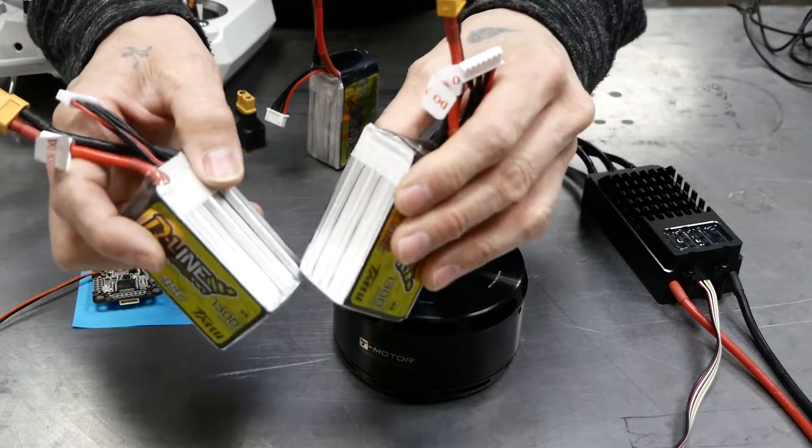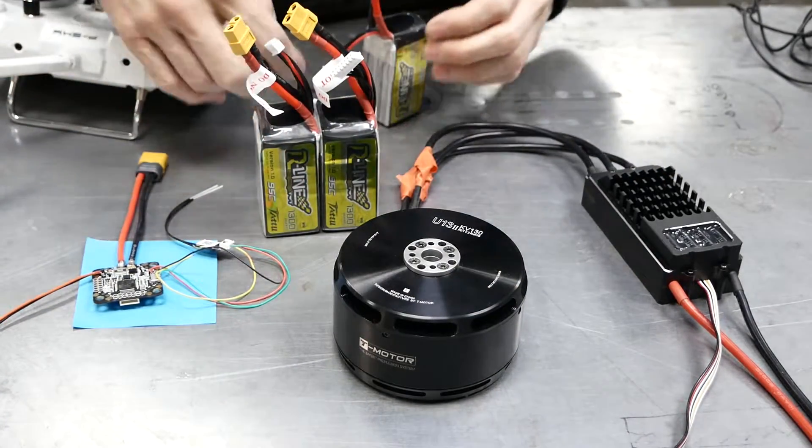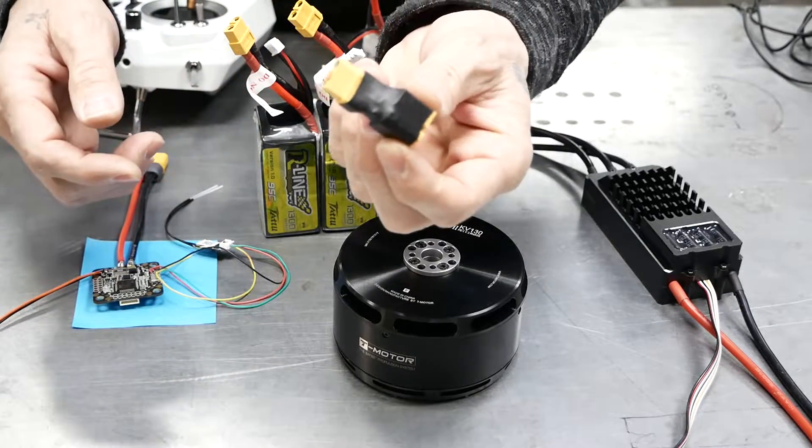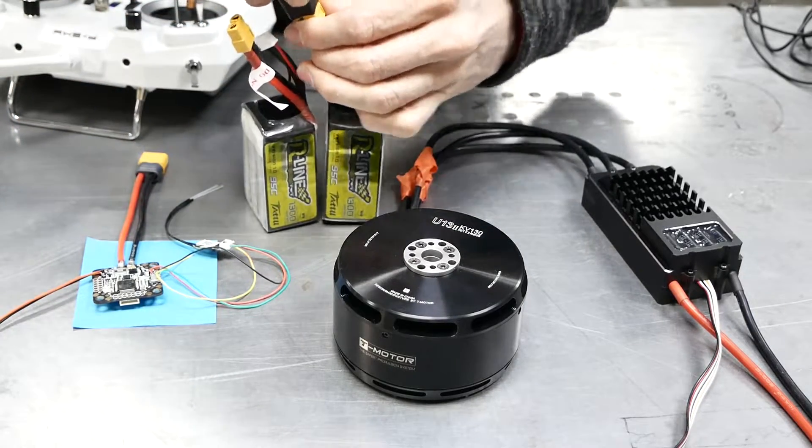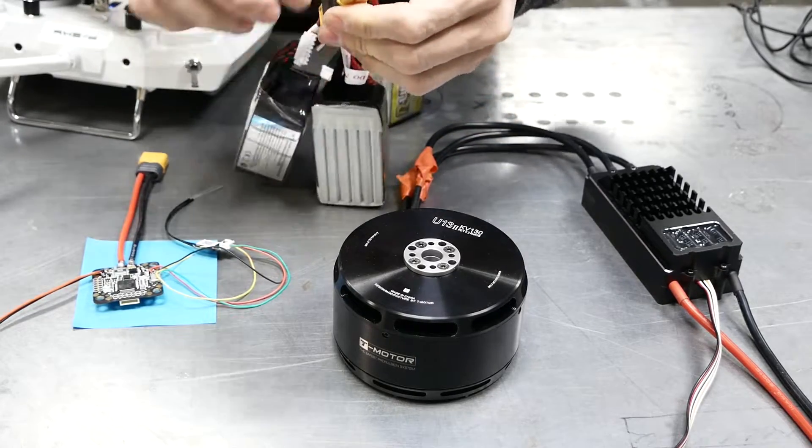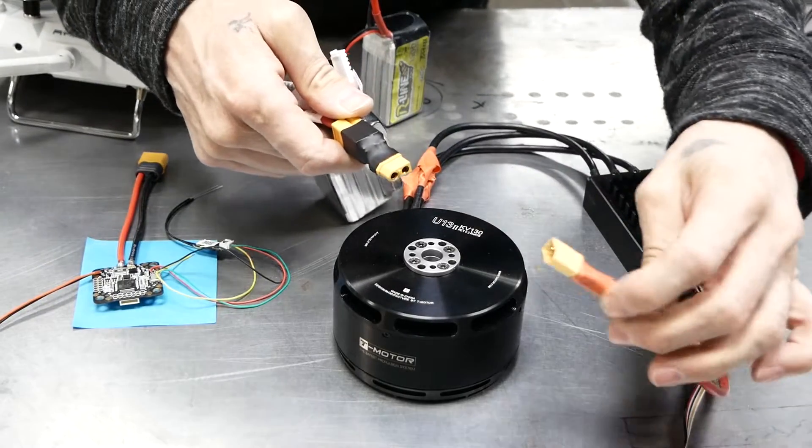And then here are my two 6S batteries and they're not very charged, so it's not going to have a whole hell of a lot of oomph to it. But this here is a serial connector for the XT60s, so plug this in here, turn this into one big battery.